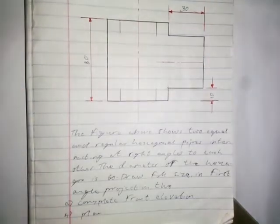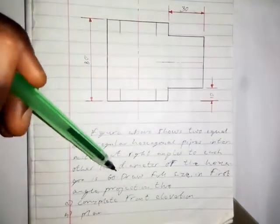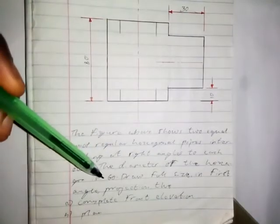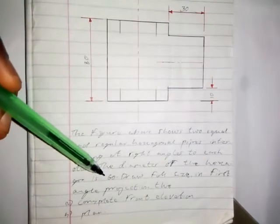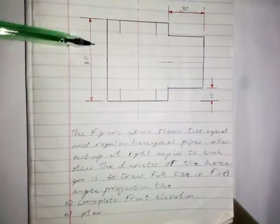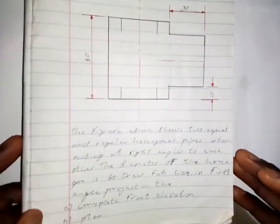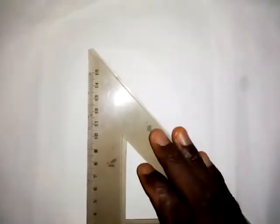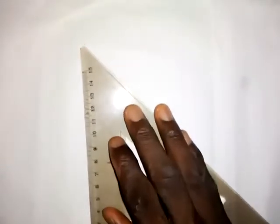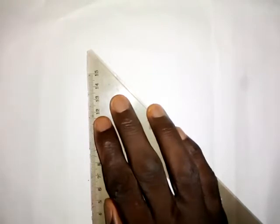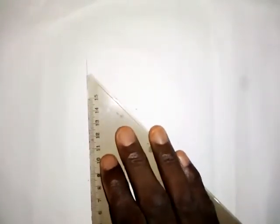As stated, the diameter of the hexagon is 60 millimeters, meaning the distance across corners is 60 millimeters. The height of the vertical prism is 80 millimeters and that of the penetrating prism is 30 millimeters, with a distance of 10 millimeters between them. The first thing to do is draw a horizontal center line.